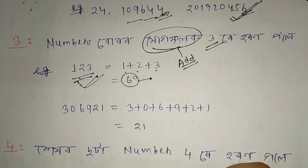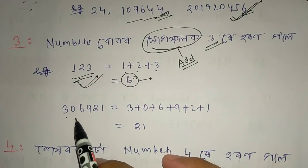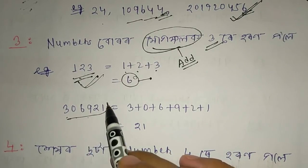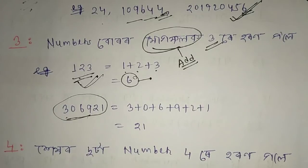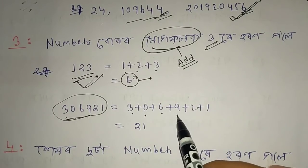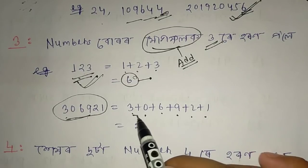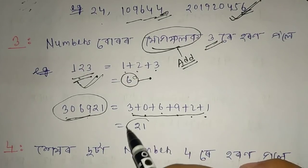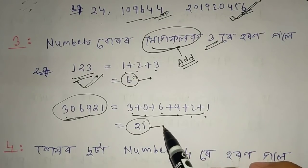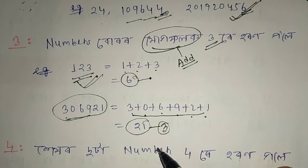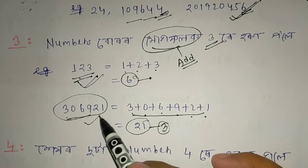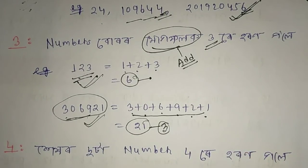First, you add all the digits of the number. Take 306921: add 3 plus 0 plus 6 plus 9 plus 2 plus 1. All the digits are added together. This sum will then be divided by 3. If it divides evenly, the number is divisible by 3. Clear?